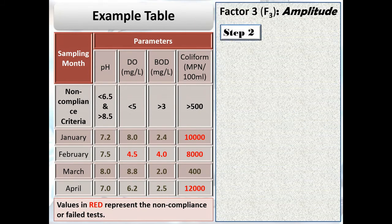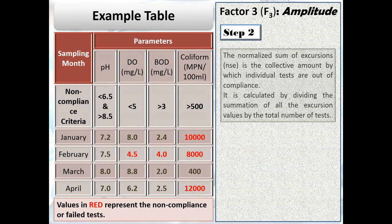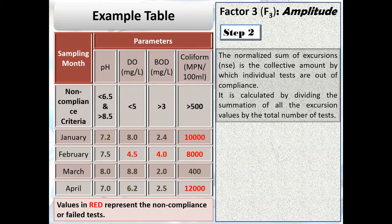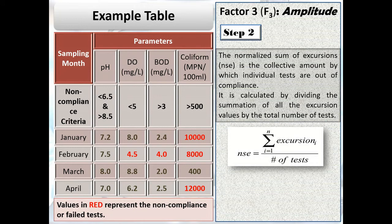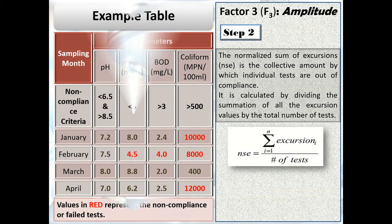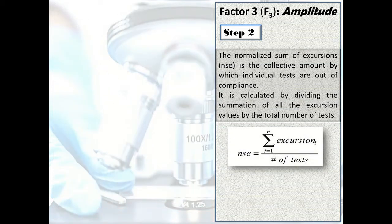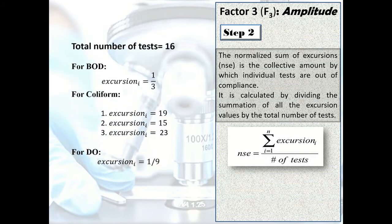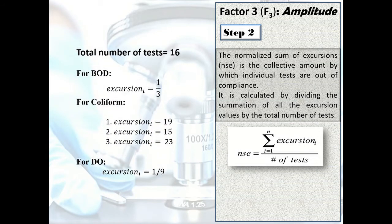In step 2 of calculating the amplitude, we calculate the normalized sum of excursion or NSE, which is equal to (summation i=1 to n of excursion_i)/number of tests. You can see in the left side all the values of excursion that we have calculated and the total number of tests is 16. Now putting them in the formula of NSE, we get NSE = 3.59.